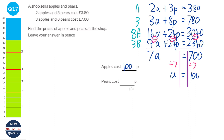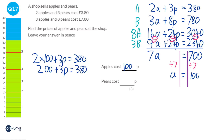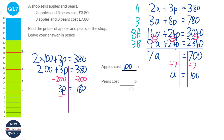Now we find the cost of pears by substituting A equals 100 into the first equation: 200 plus 3P equals 380. Subtracting 200 from both sides gives 3P equals 180, so P equals 60. A pear costs 60 pence. We can check using the second equation: 3 times 100 plus 8 times 60 equals 300 plus 480 equals 780. Correct.